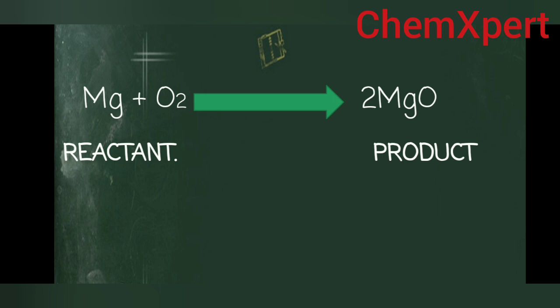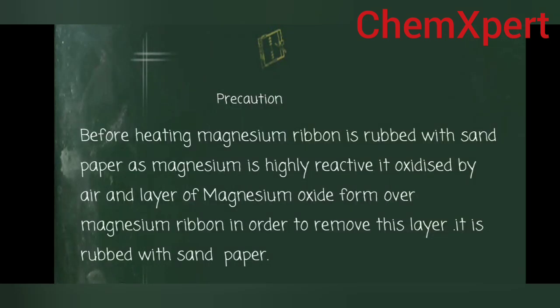Mg + O₂ → MgO. The reactant gives rise to the product. This type of reaction is called a combination reaction — when two reactants combine to form a single product. Why do we rub the magnesium ribbon with sandpaper? Because magnesium is highly reactive with oxygen and forms a magnesium oxide layer. Rubbing removes that layer so the ribbon burns easily.